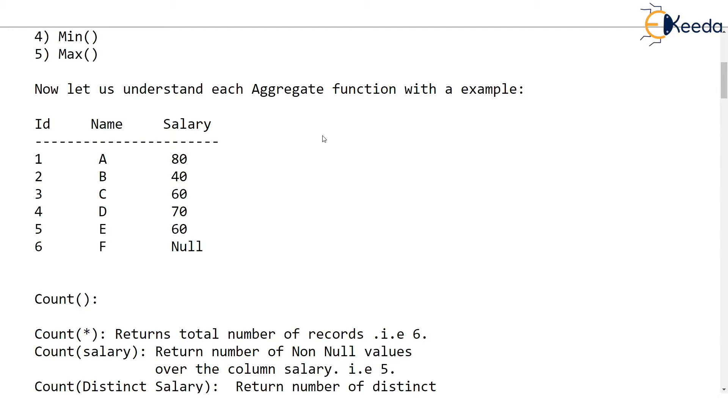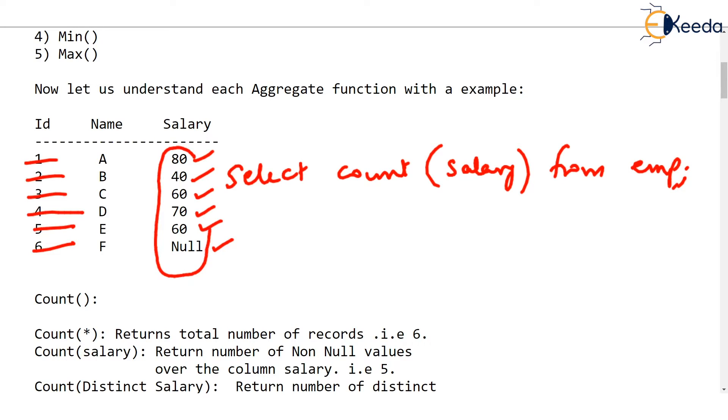Instead of counting star, you can say select count salary from emp. Now observe what you are counting. You are not counting rows of the table, but you are counting how many salaries are there. Number of salaries are also actually 6 because there are 6 rows. But what will count on salary do? It will count only non-null salaries. This null has no value. So the answer given by count salary will be 5.